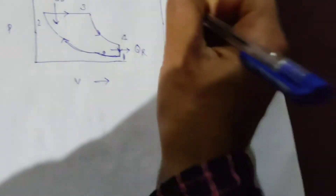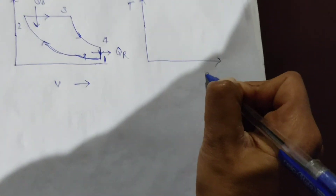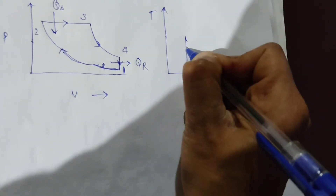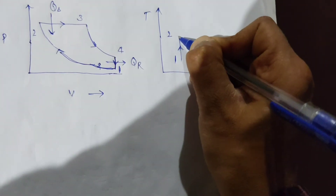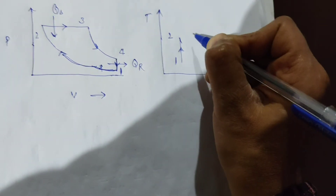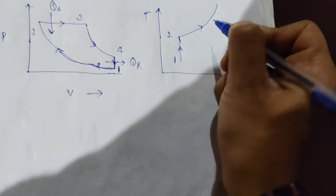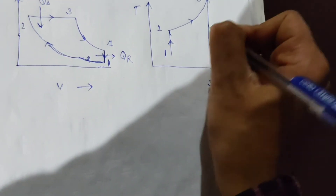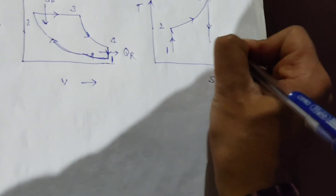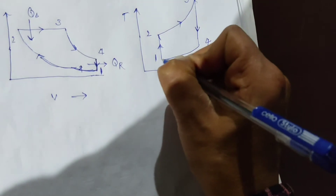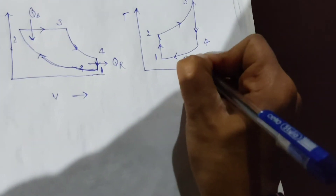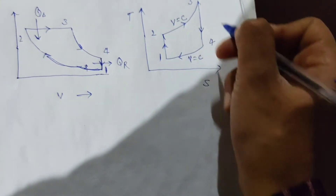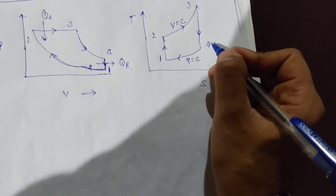Now let's draw the T-S diagram of this cycle. Process 1 to 2 is the isentropic process, and process 2 to 3 is the constant pressure process. Process 4 to 1 is a constant volume process, and process 3 to 4 is also an isentropic process. This is figure A (PV diagram) and figure B (T-S diagram).